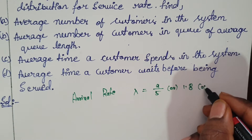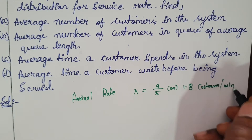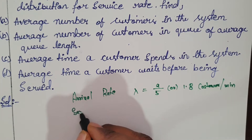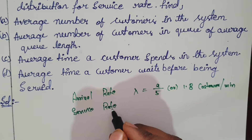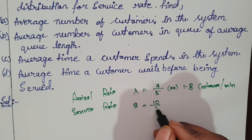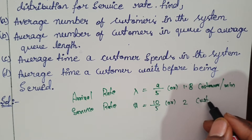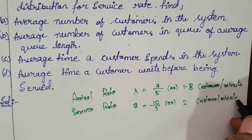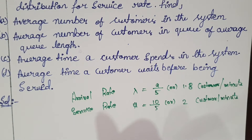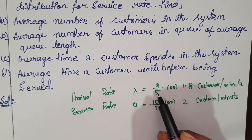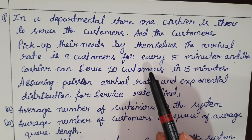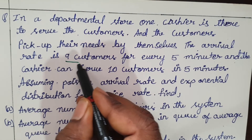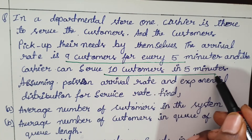Lambda is equal to 9/5 or 1.8 customers per minute. The service rate: mu is equal to 10 by 5, which you can write as 2 customers per minute. Both values are in minutes. The first value — arrival rate — you take as lambda, and the second value — service rate — you take as mu.